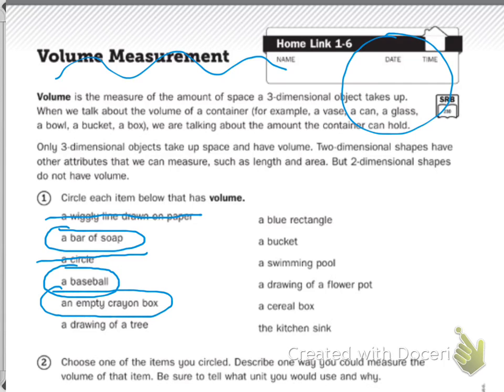The next one says a drawing of a tree. Now I'm starting here where I drew the star. A blue rectangle, a bucket, a swimming pool. A drawing of a flower pot - keyword there, drawing of a flower pot. A cereal box, the kitchen sink.